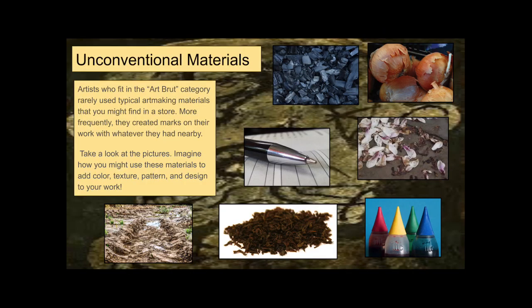Here are some unconventional materials you might think of using. Artists in the Art Brut category rarely use typical art making materials that you might find in a store. More frequently, they created marks on their work with whatever they had nearby. Take a look at the pictures and imagine how you might use these materials to add color, texture, pattern, and design to your artwork. For example, at the top you see some charcoal — maybe you have a fire pit in your yard and you can grab some charcoal and draw with it. You can boil onion skins to create a type of paint, or find some flower petals and rub those on your paper to get some color onto your page.